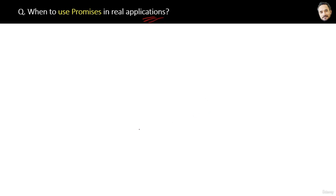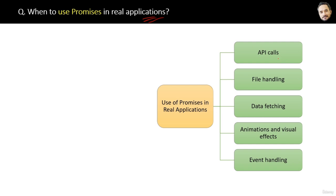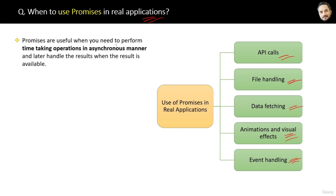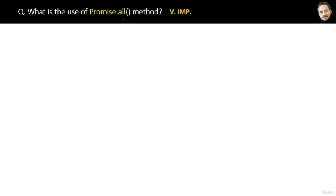When to use promises in real applications: for API calls, file handling, data fetching, animations, and event handling. In short, wherever you need to manage asynchronous operations, you can use promises. The key point is: promises are useful when you need to perform time-consuming operations asynchronously and handle the results when they are available — because a promise will not give you data immediately but promises to give the result after some time.